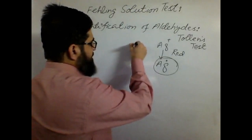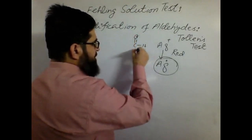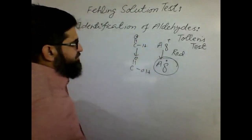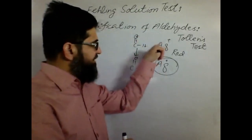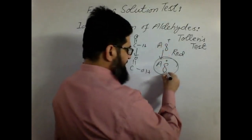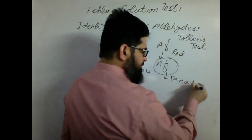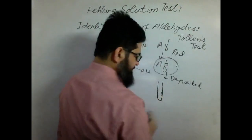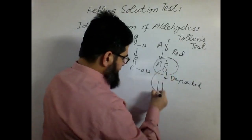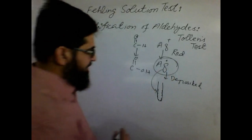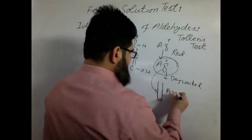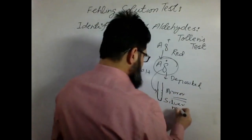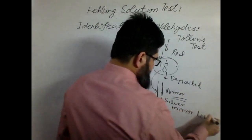During the Tollens test, an aldehyde is oxidized to carboxylic acid. This oxidation is co-parallel with the reduction of the silver. This reduced silver gets deposited along the walls of the test tube. That silver metal appears to us as a mirror — we also call it the silver mirror test.